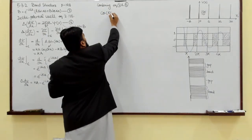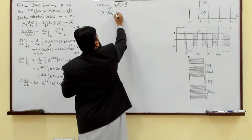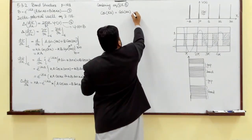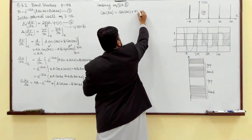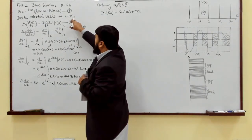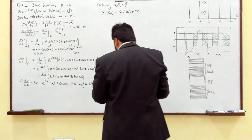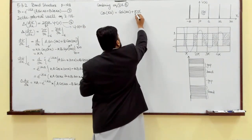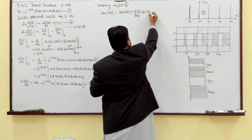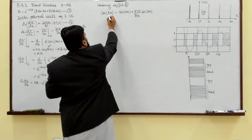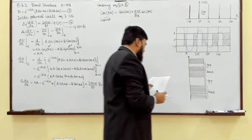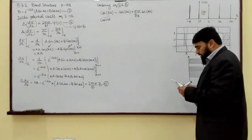After simplification, I get that cos(capital K·a) equals cos(small k·a) plus mα over ℏ²·k times sin(ka). Here alpha is from the delta potential, where we know alpha. In this expression, capital K is not to be confused with small k, which is related to the energy of the wave function. This equation determines the possible values of k and therefore the allowed values of energy.